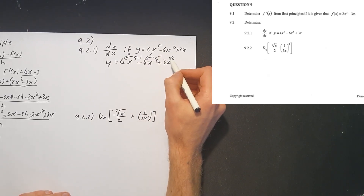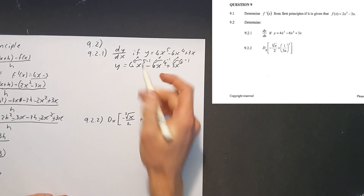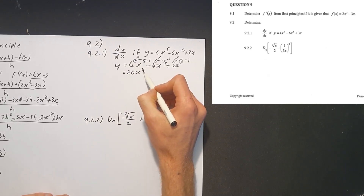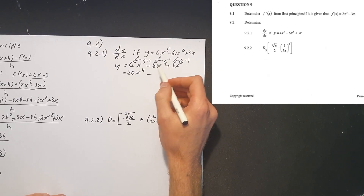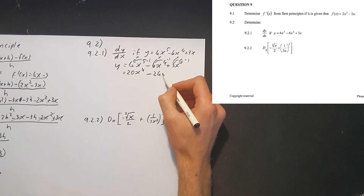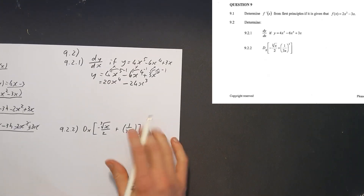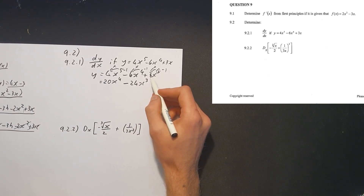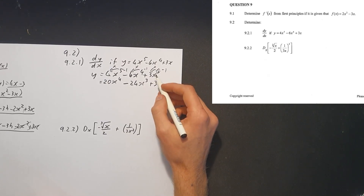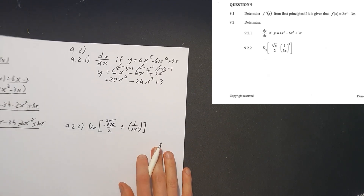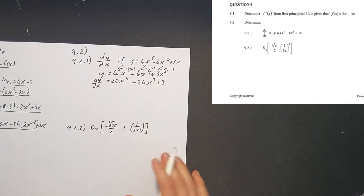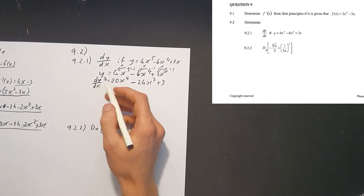Let's apply the rule: 5 times 4 gives 20, x to the power of 5 minus 1 is x to the 4. Then minus 4 times 6 is 24, x to the power of 4 minus 1 is x to the 3. Then 3x to the power of 1: 1 times 3 is 3, and 1 minus 1 is 0 — anything to the power of 0 is 1 — so it's 3 times 1. Therefore dy/dx equals 20x to the 4 minus 24x cubed plus 3. Note that dy/dx and y prime are equivalent.